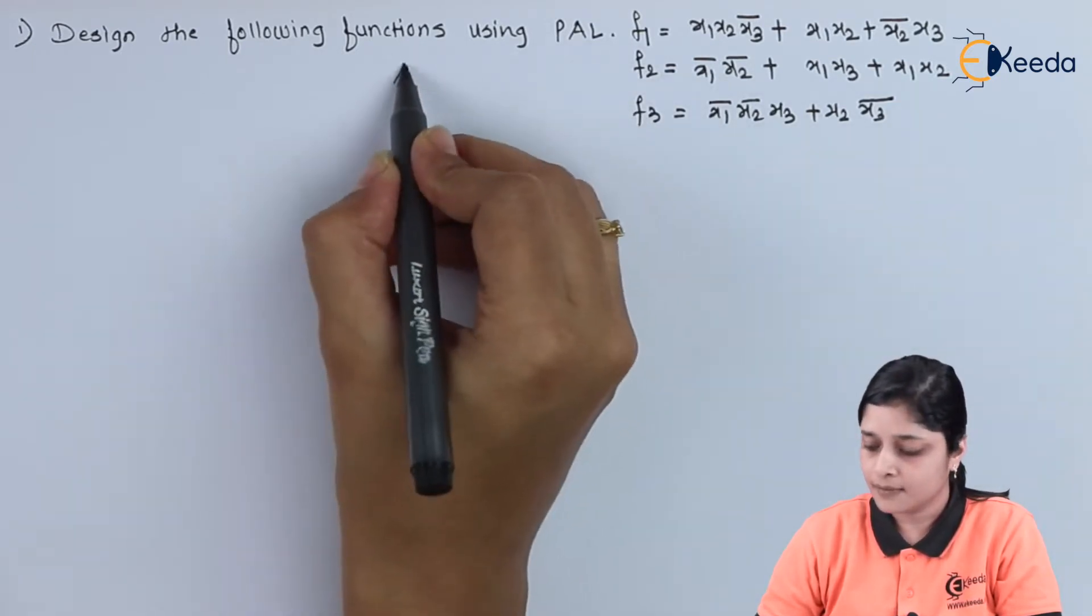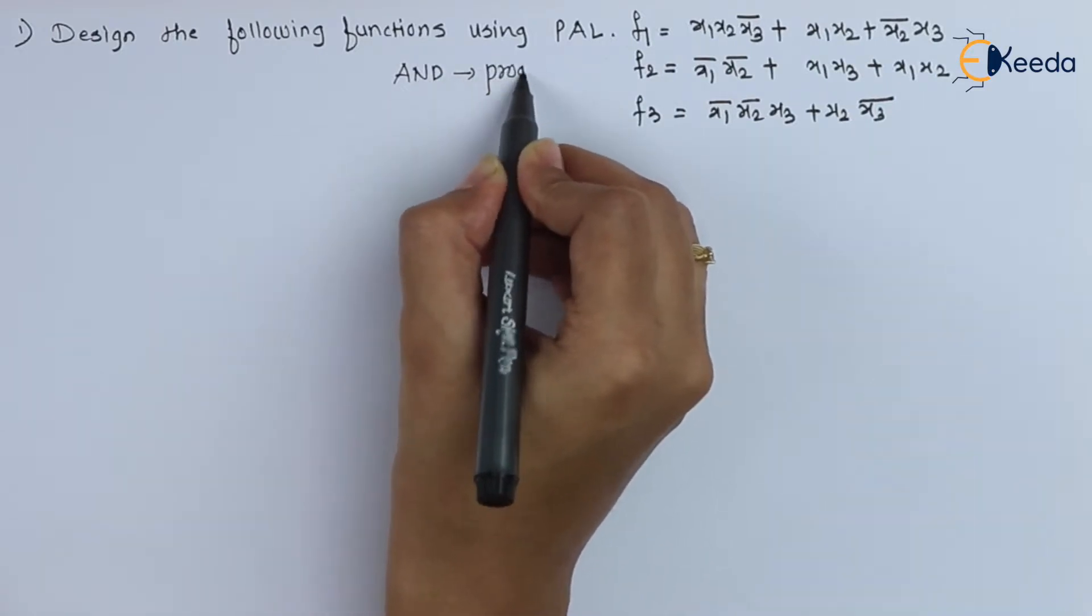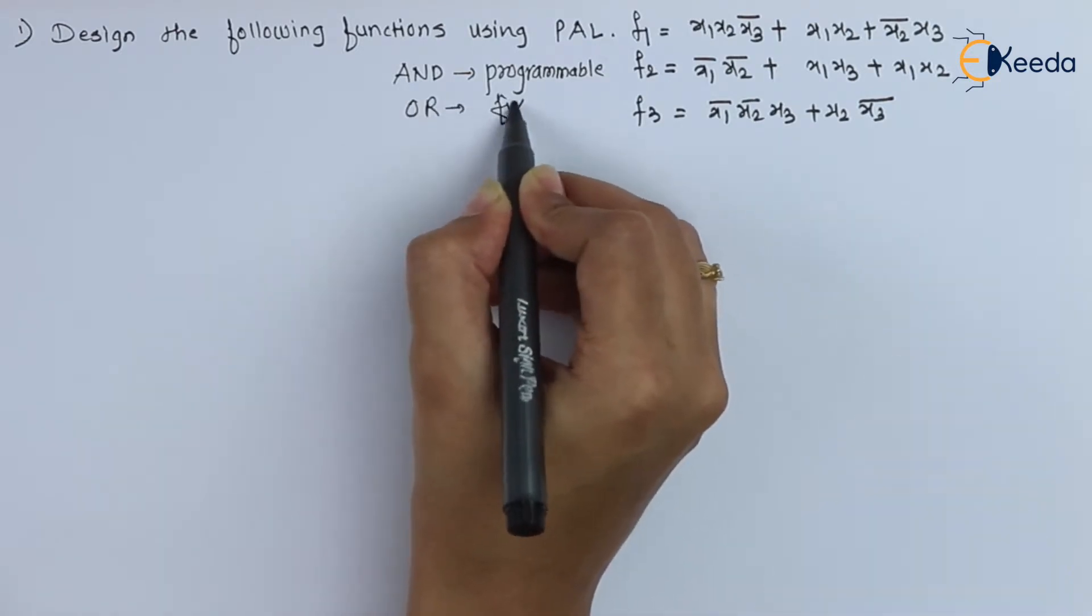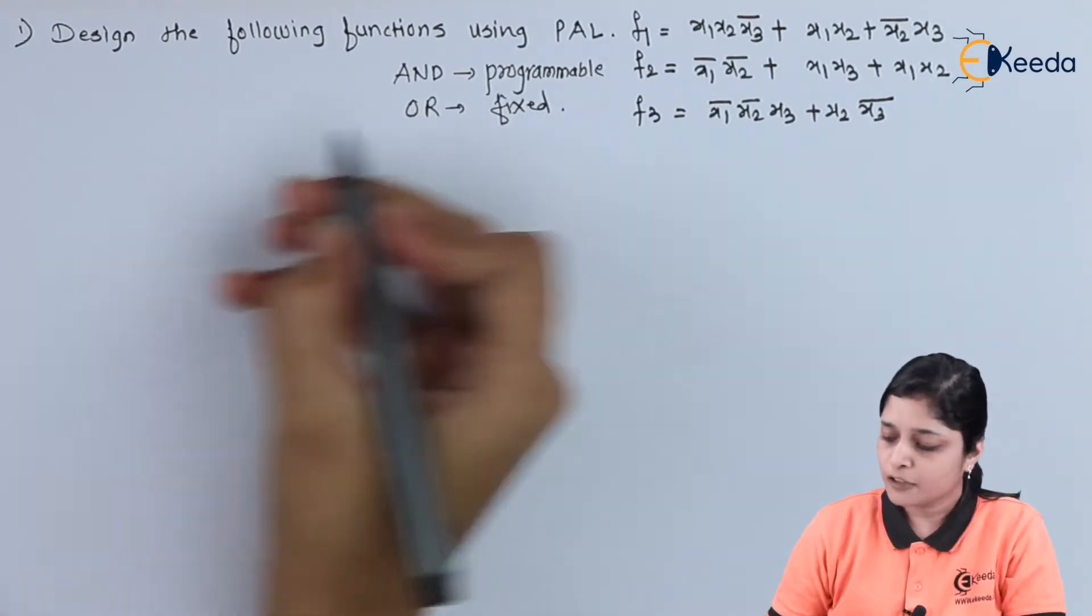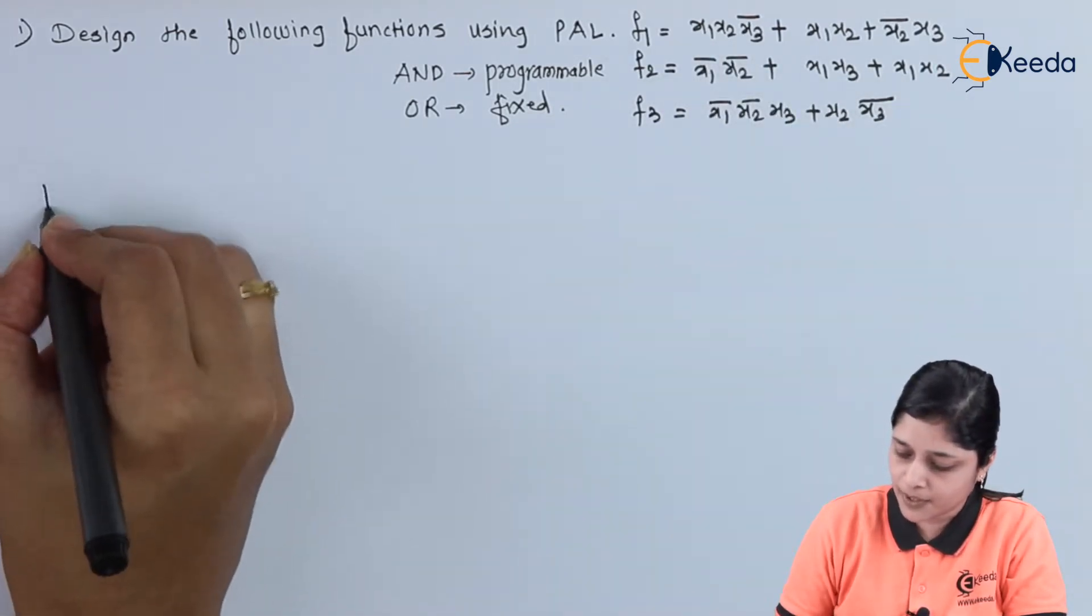For PAL, AND gate is programmable and OR gate is fixed. And input variables required are x1, x2, and x3. So we will start with the implementation.